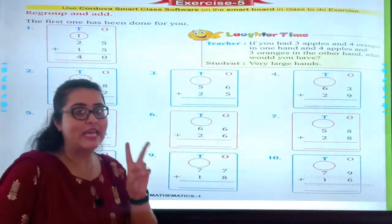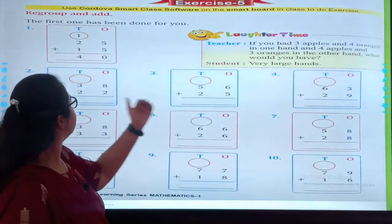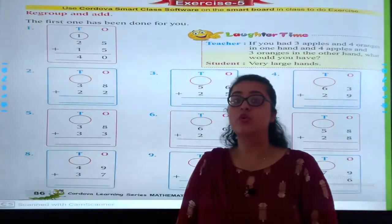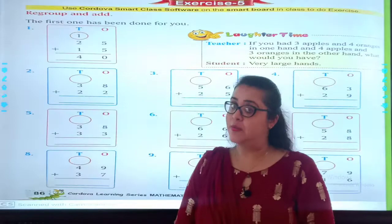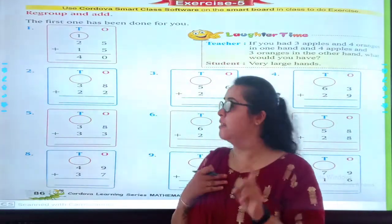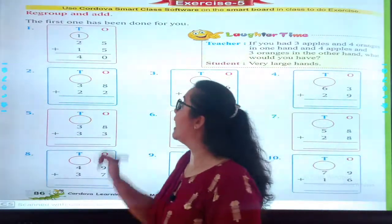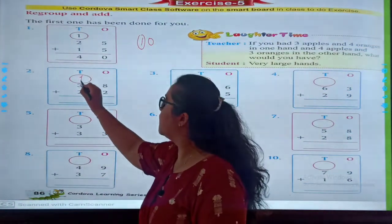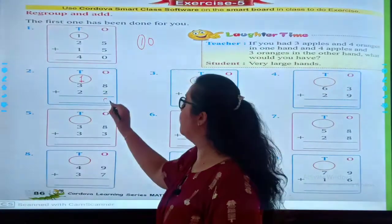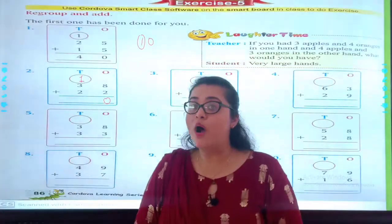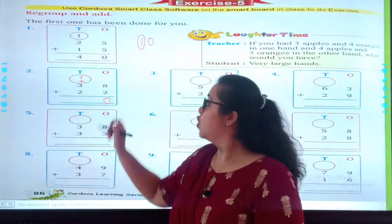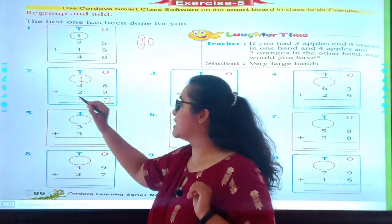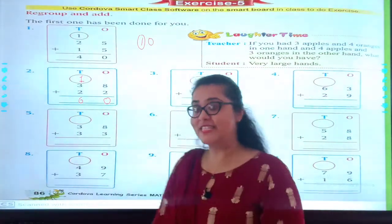Now let's do the second one. 8 plus 2? Yes. When we add 8 plus 2 we will get 10. So what will ma'am do? 0, and 1 carries forward. 1 plus 1 is 2, plus 2 is 4. Let's move to third one.